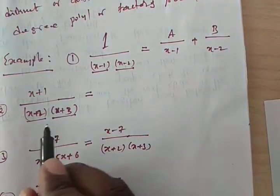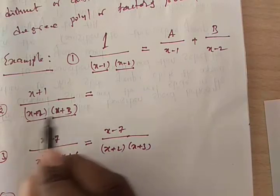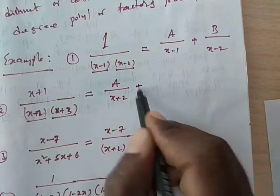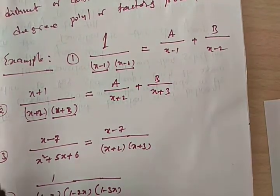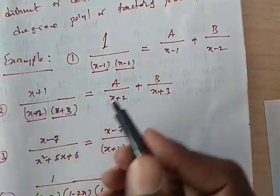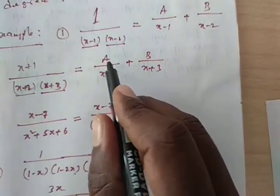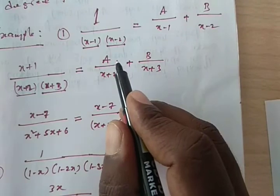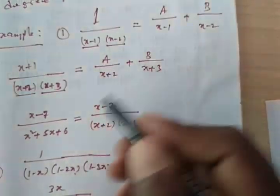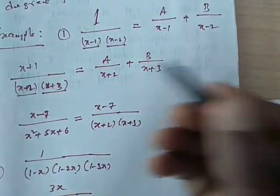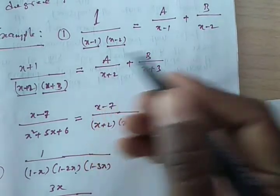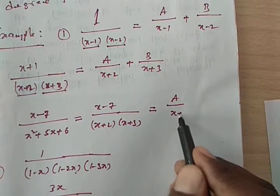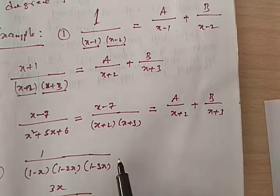For the example (x−7)/[(x+2)(x+3)], we write it as A/(x+2) + B/(x+3). For 1/[(1−x)(1−2x)(1−3x)], which has three distinct linear factors, we write A/(1−x) + B/(1−2x) + C/(1−3x), splitting the big fraction into a sum of three simple fractions. That is our aim: to divide a complex fraction into an algebraic sum of simple fractions.